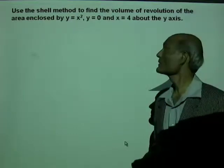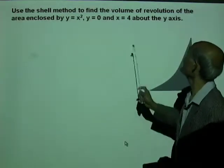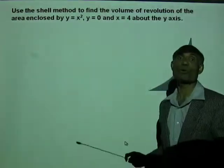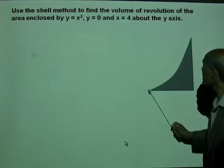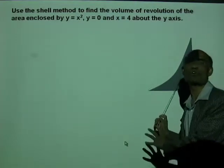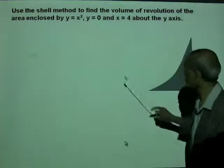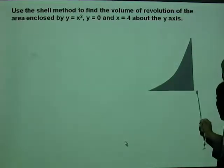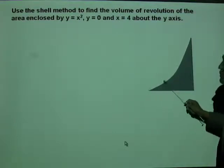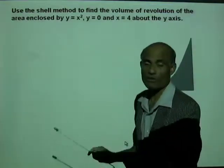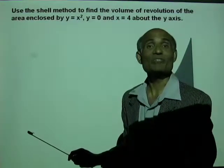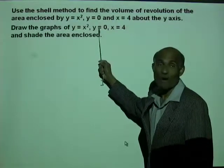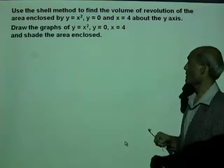Use the shell method to find the volume of revolution of the area enclosed by y = x², y = 0, and x = 4 about the y-axis. Draw the graphs: y = x² is a parabola, y = 0 is the x-axis, and x = 4 is a vertical line. Shade the enclosed area.